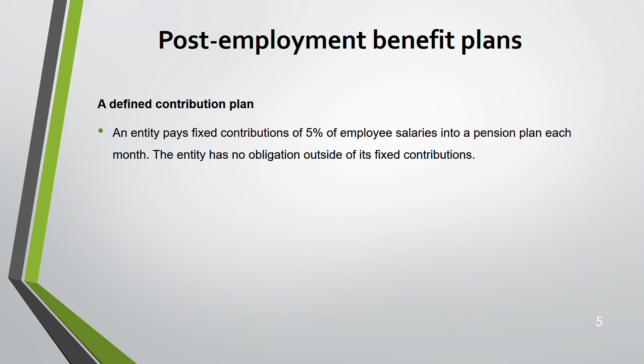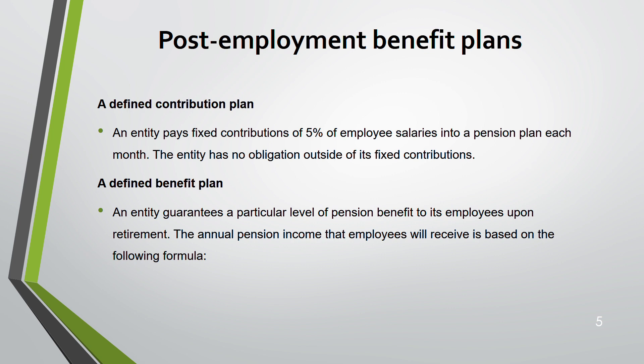In a defined contribution plan, the company has no obligation to pay beyond the fixed contribution — it's fixed at, say, 5% of salary, no more, no less. In a defined benefit plan, you promise to pay an agreed amount to your employee, and for this we use a formula.